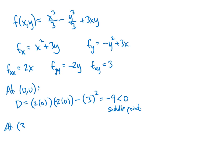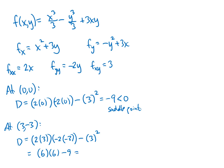Our other critical point was (3, negative 3). At that point, D equals (2 times 3) times (negative 2 times negative 3) minus 3 squared. That's 6 times 6 minus 9, which is 36 minus 9 equals 27. Since D is positive, we look at fxx, which was 6 — also positive. The second derivative test tells us we have a local minimum at the point (3, negative 3).